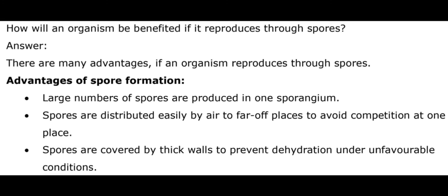Question 5: How will an organism be benefited if it reproduces through spores? Answer: Advantages of spore formation are: Number 1, a large number of spores are produced in one sporangium at a time. Second, spores are distributed easily by air to far-off places to avoid competition at one place. Third, spores are covered by thick walls to prevent dehydration under unfavorable conditions.